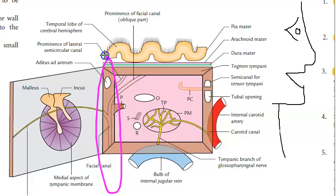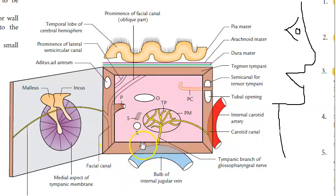Let's go wall by wall. The posterior wall — what will you see? Aditus ad antrum, then fossa incudis, then you should see the pyramid marked here as 'P' — a conical bony projection. Then you have the vertical part of the facial canal, and the posterior canaliculus for the chorda tympani.